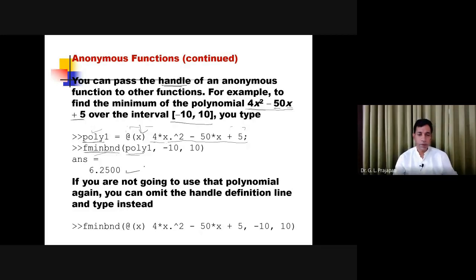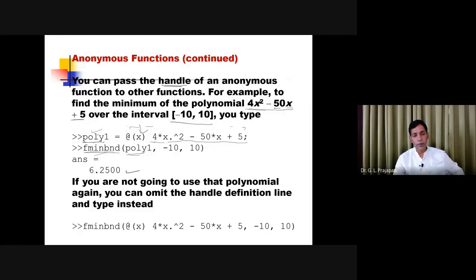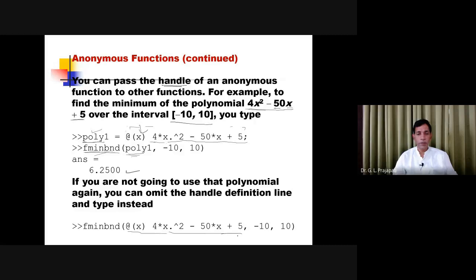Once you have created the anonymous function, the handle can be passed to other functions. If you were not going to pass the handle, you would need to write the complete expression each time. So instead, you create the anonymous function once and pass the handle 'poly1' whenever needed. Sometimes you may be required to find the minimum value again and again, and instead of retyping the expression, you just pass the handle of the anonymous function.